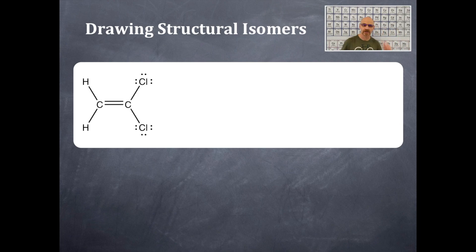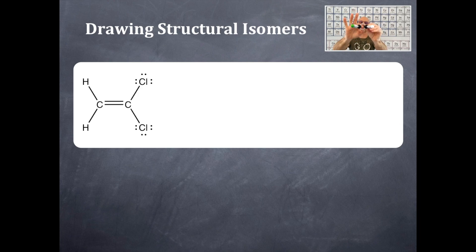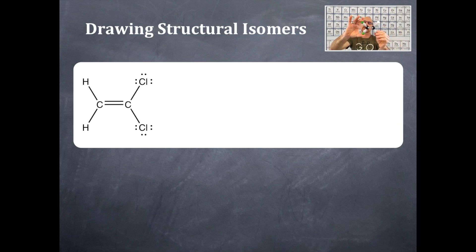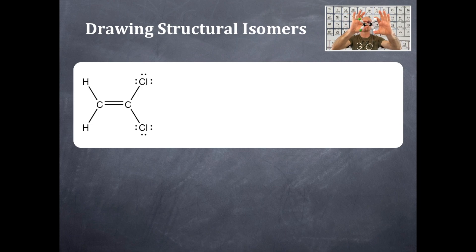Here is one of the structures. There are two carbons — the black things here are carbons — and it has a double bond, which is a sigma and a pi bond. There is no rotation around this double bond, because the pi bonds above and below the sigma bond inhibit rotation. Unlike a single bond where there is rotation, this inhibition of rotation allows us to have structural isomers. The two green things are the chlorines, the two white things are the hydrogens, with three lone pairs on each chlorine. This is one structural isomer of C2H2Cl2.